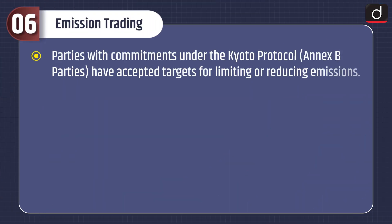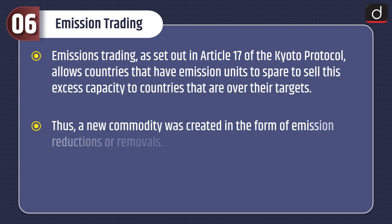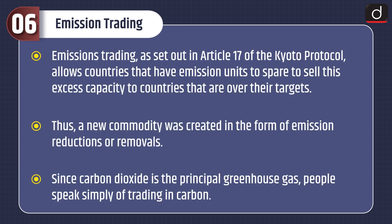Regarding emission trading, parties with commitments under the Kyoto Protocol have accepted targets for limiting or reducing emissions. These targets are expressed as levels of allowed emissions, or assigned amounts, over the 2008 to 2012 commitment period. The allowed emissions are divided into Assigned Amount Units, or AAUs. Emissions trading, as set out in Article 17 of the Kyoto Protocol, allows countries that have emission units to spare to sell this excess capacity to countries that are over their targets.